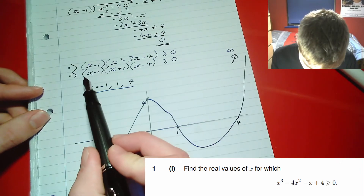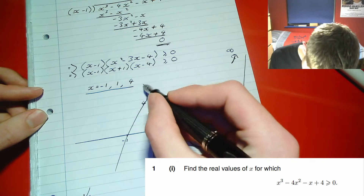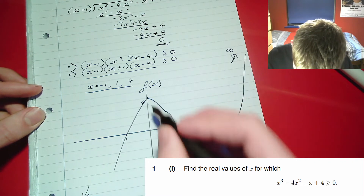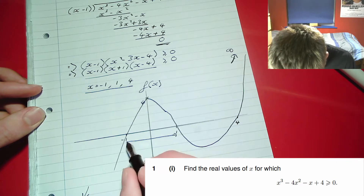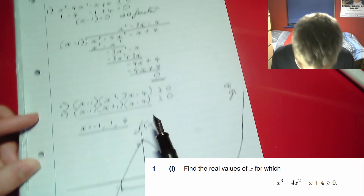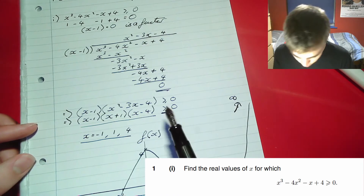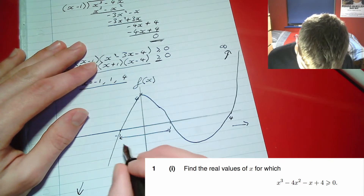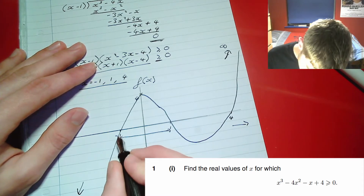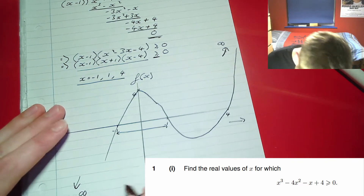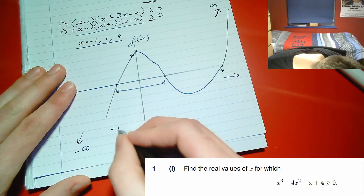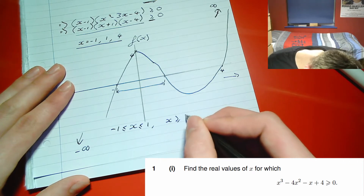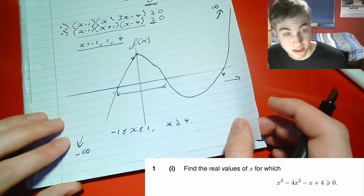We're looking for where the graph is positive, i.e. where f(x) is greater than or equal to zero. From the sketch, the graph is positive between minus 1 and 1, and also for x greater than 4. Since it's not a strict inequality, the endpoints are included. So our final answer is: minus 1 ≤ x ≤ 1, or x ≥ 4.